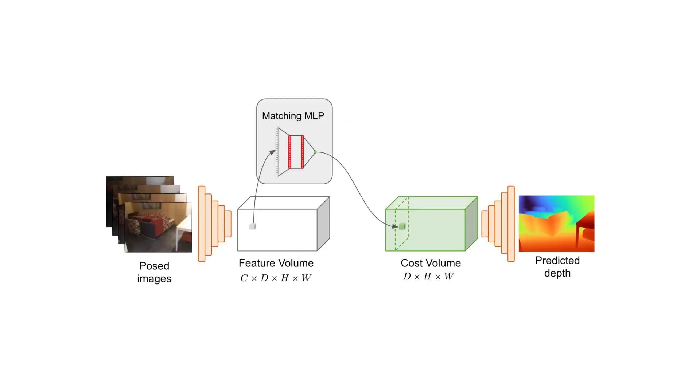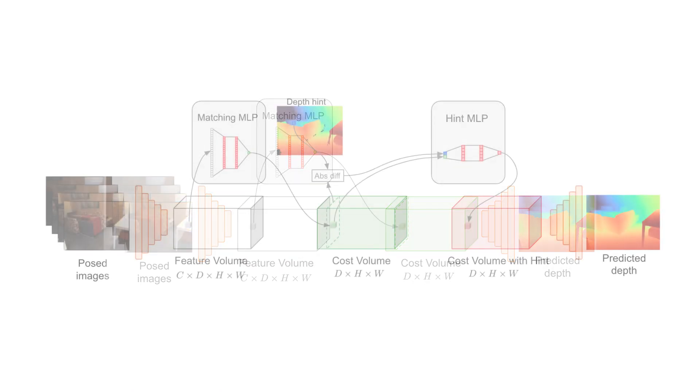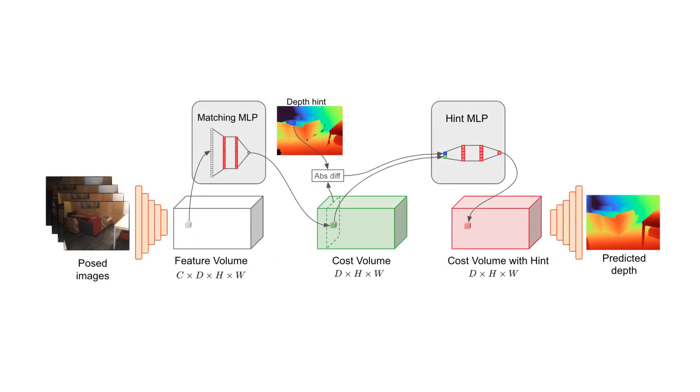We call the depth render we get from rendering the live mesh a geometry hint. This geometry hint is cheap to compute, and we include it right after the matching step in our cost volume, aggregating it with the plane sweep matching score using a hint MLP.